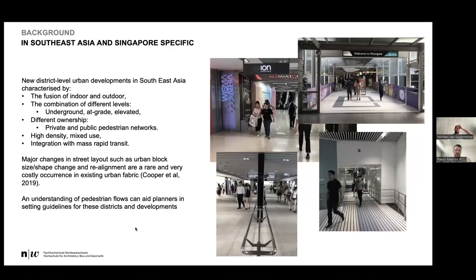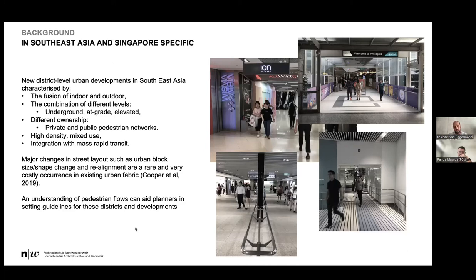Specifically in Asia and Singapore, there are district-level urban developments. There is this fusion of indoor-outdoor, with an indoor network that is really a network by itself but also part of the broader network. There are different levels where people move: underground, at grade, and elevated between buildings. In these images you see different ownerships — top left, two shopping malls where the ownership changes — you see public transit stops, and these are all interconnected, which gives very difficult challenges to planners.